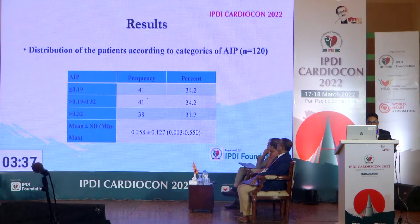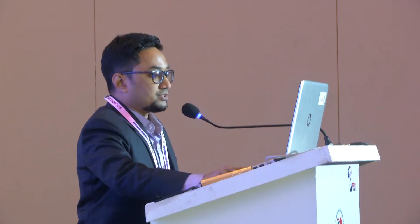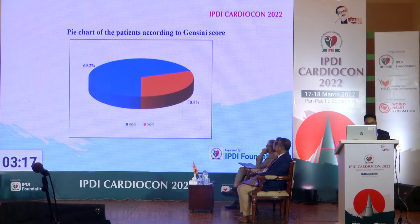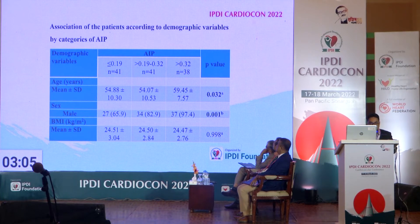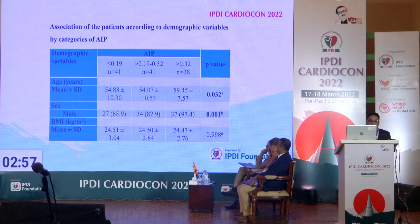Distribution of patients according to categories of AIP showed three categories: the first group was 34%, the second group was 34.2%, and the third group was 31%. The pie chart of patients according to Jensen score showed that less than 64 was 69% and more than 64 was 30%. Association of patients according to demographic variables by AIP categories showed that age and sex had statistically significant P-values.